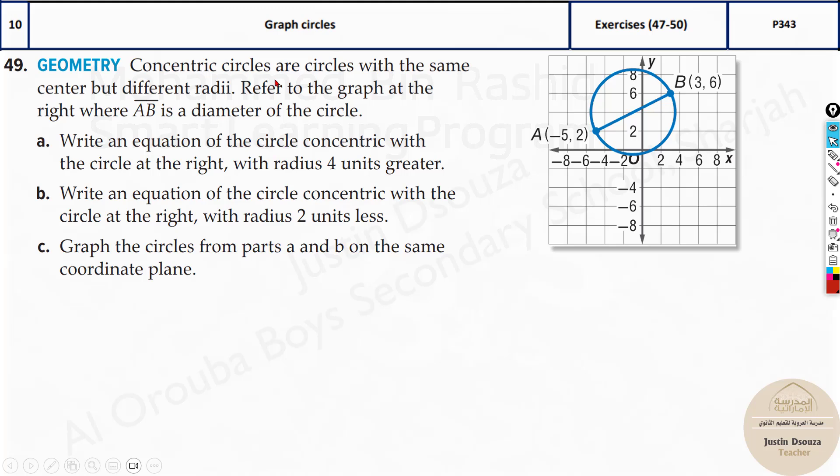Now, this one over here is about concentric circles. Circles with the same sector but different radii. Refer to the graph at the right where AB, this is the line, is the diameter of the circle. Write an equation of the circle concentric with the circle at the right with a radius of four units greater. Now, what you need to understand is now they have told the center is same, but there is four more extra radius. So it's outer, bigger.